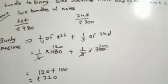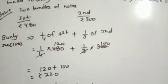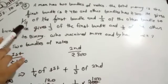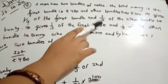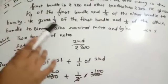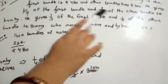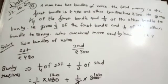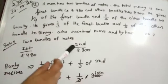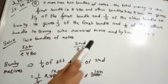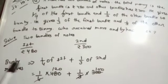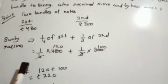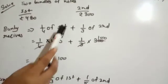The first bundle is ₹480 and the other bundle is ₹300. Bunty receives 1/4 of the first bundle and 1/3 of the second bundle.